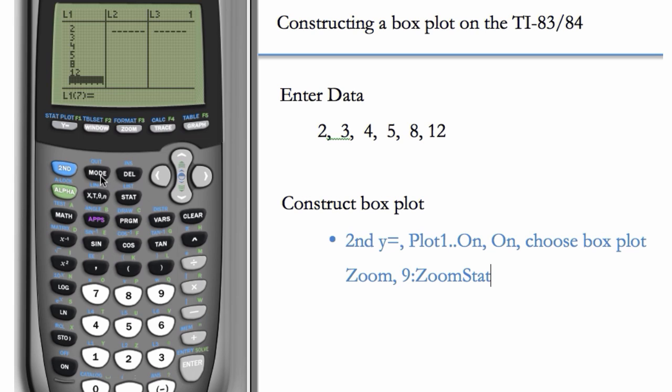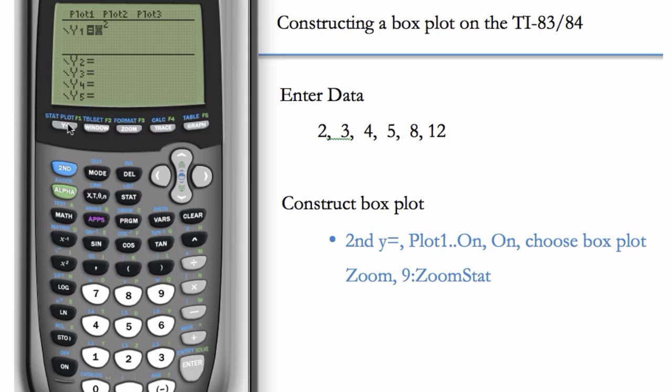Let's see what this looks like. You're probably used to going to y equals in other math classes. Here you can draw functions, but we're going to go to 2nd y equals, and this is stat plot. So 2nd y equals is stat plot. We can hit 1 or enter to select plot 1. Right now we can see that it's off, so we'll hit enter again. And now you can see that on is selected.